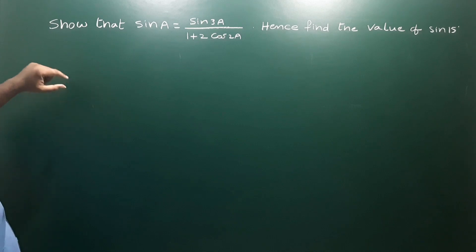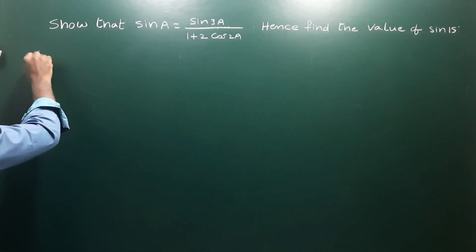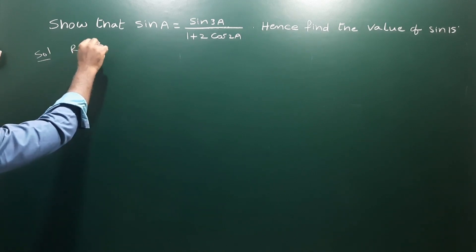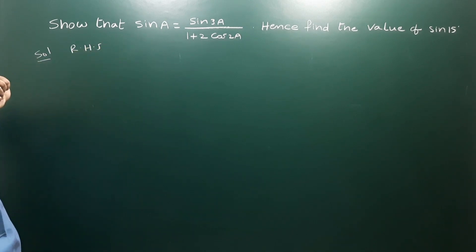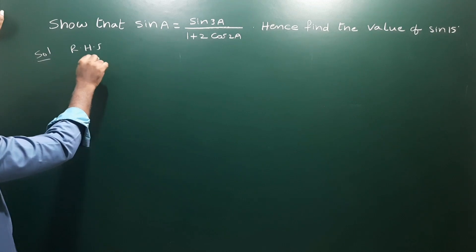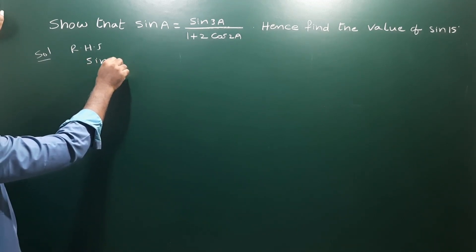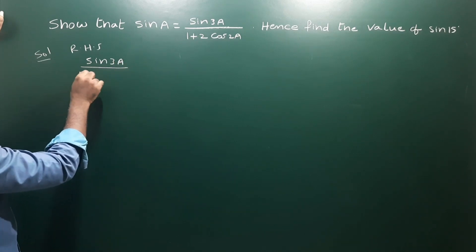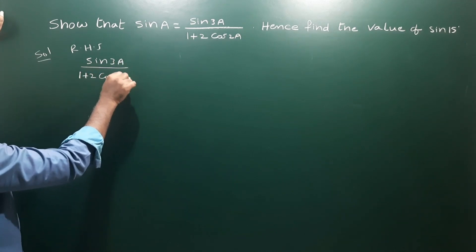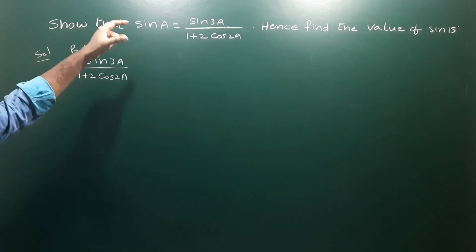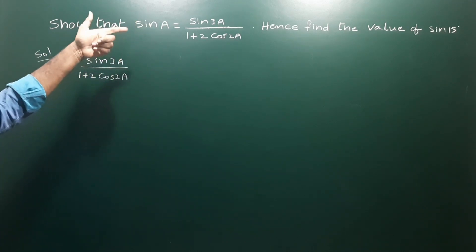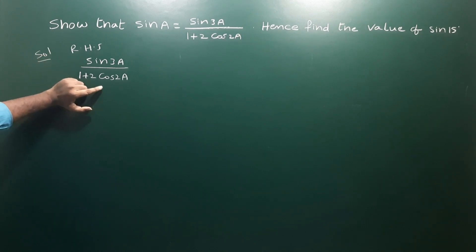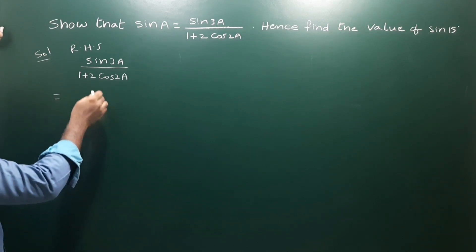Let us take the RHS. On the LHS only sin a is there, so we cannot simplify it directly. So we take the RHS: sin 3a divided by 1 plus 2 cos 2a, and simplify this so that we get sin a.